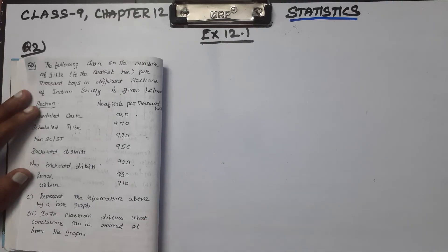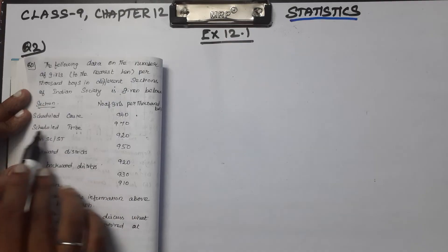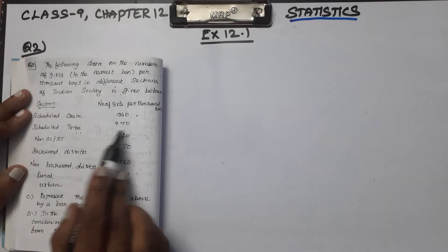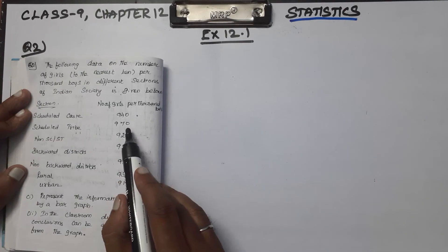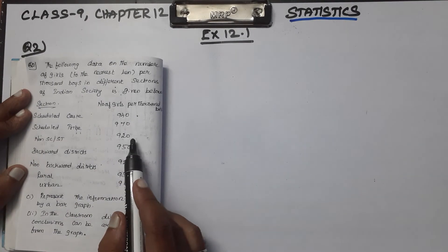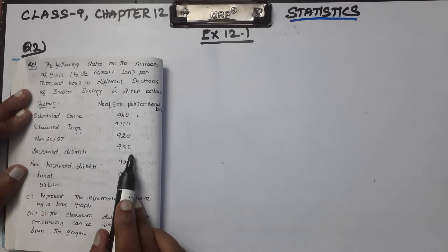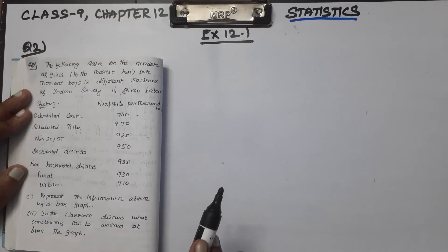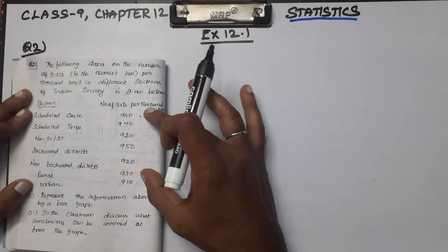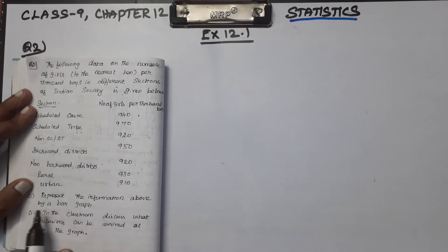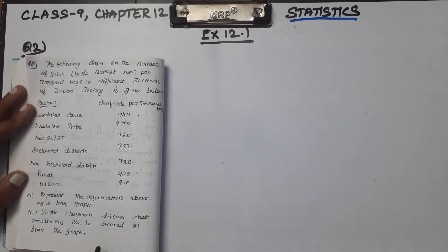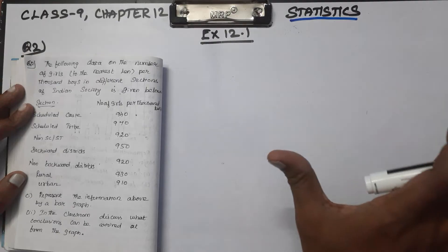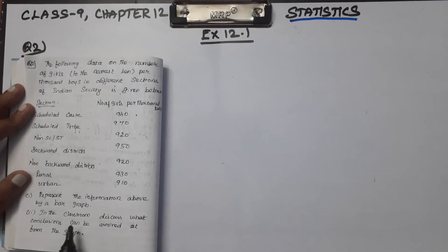In the scheduled caste section: 940 girls per 1000 boys. Scheduled Tribe: 970 girls. Non-SC/ST: 920 girls for 1000 boys. Backward districts: 950 girls for 1000 boys. Represent the information by a bar graph and discuss what conclusions can be arrived at from this diagram.